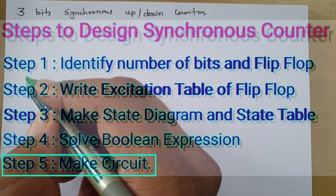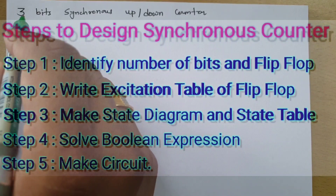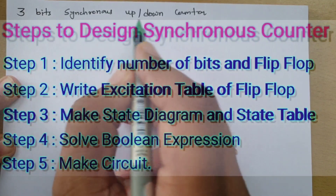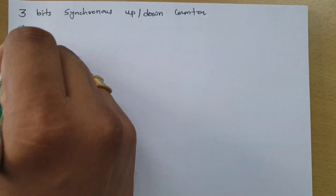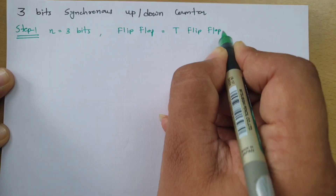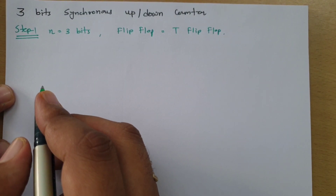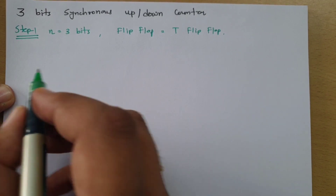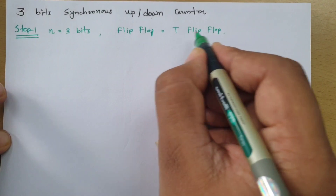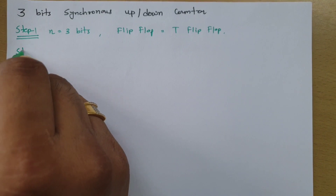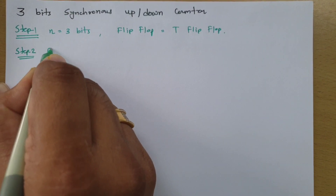As per the first step, we have a 3-bit synchronous up-down counter and we will be selecting the T flip-flop. In the next step, we need to write the excitation table of the selected flip-flop. So we have selected the T flip-flop, and we need to write its excitation table.